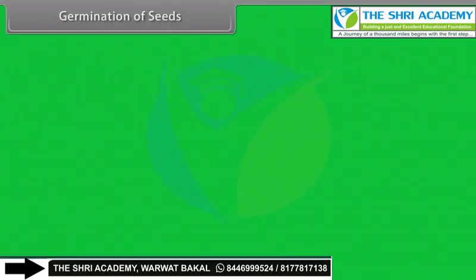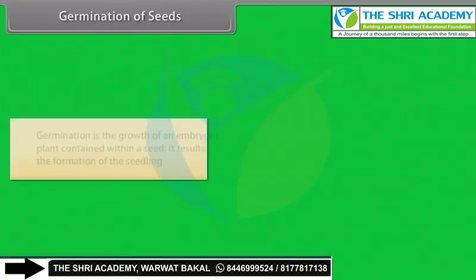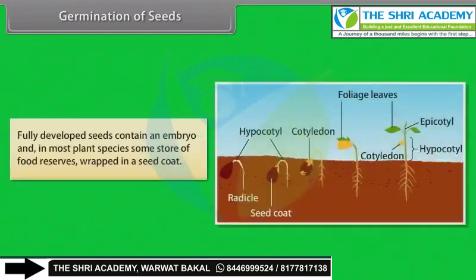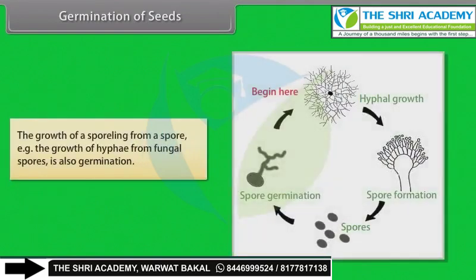Germination of Seeds: Germination is the growth of an embryonic plant contained within a seed; it results in the formation of the seedling. Fully developed seeds contain an embryo and, in most plant species, some store of food reserves wrapped in a seed coat. The growth of a sporeling from a spore — for example, the growth of hyphae from fungal spores — is also called germination.